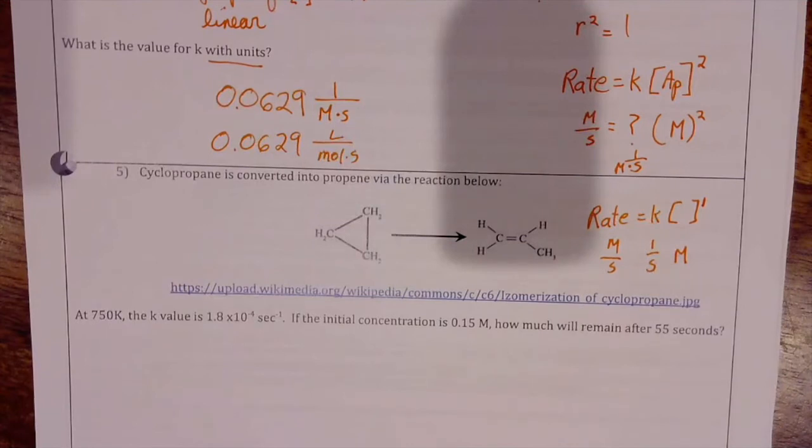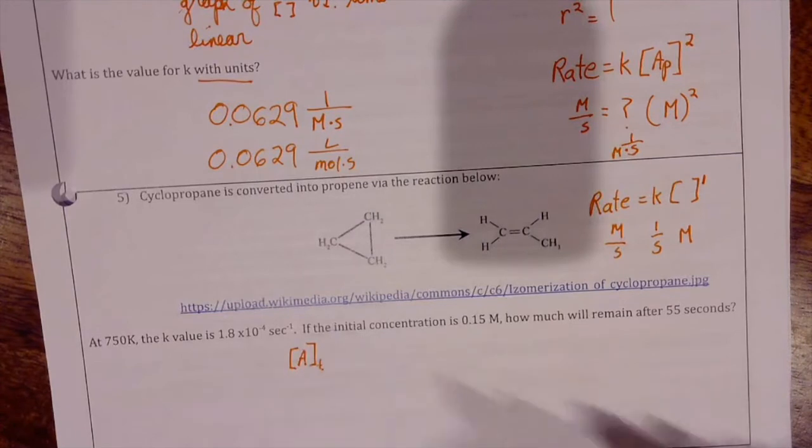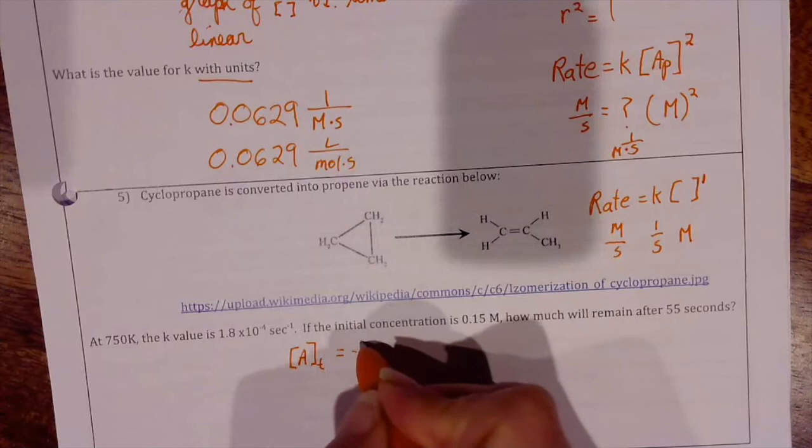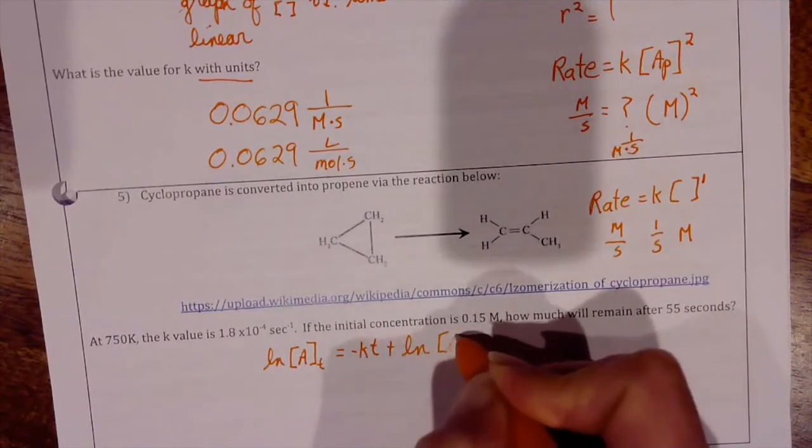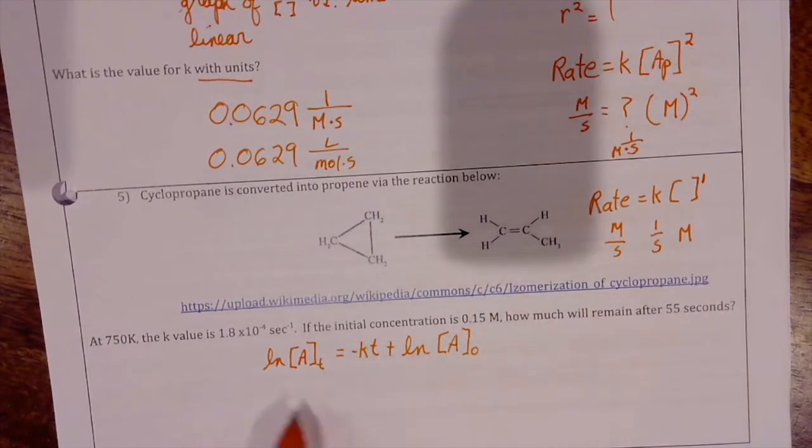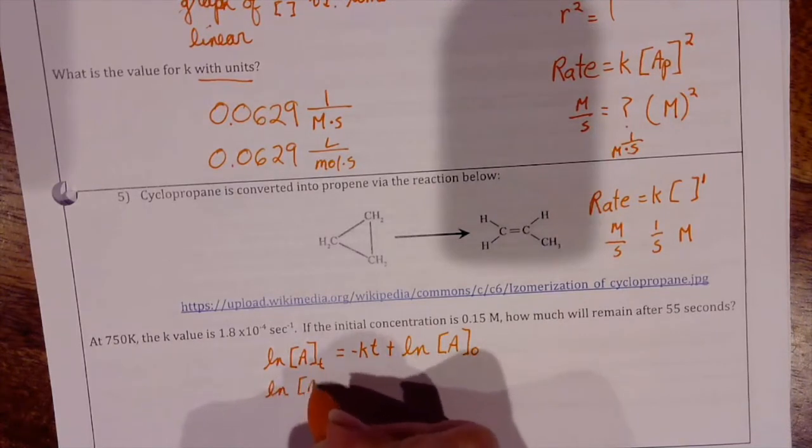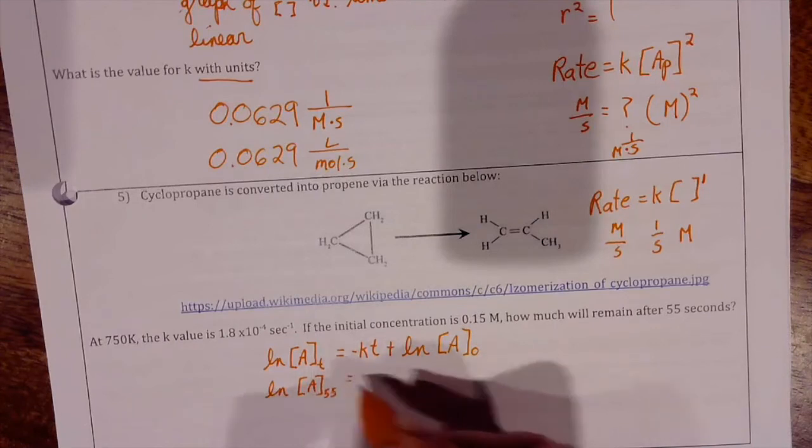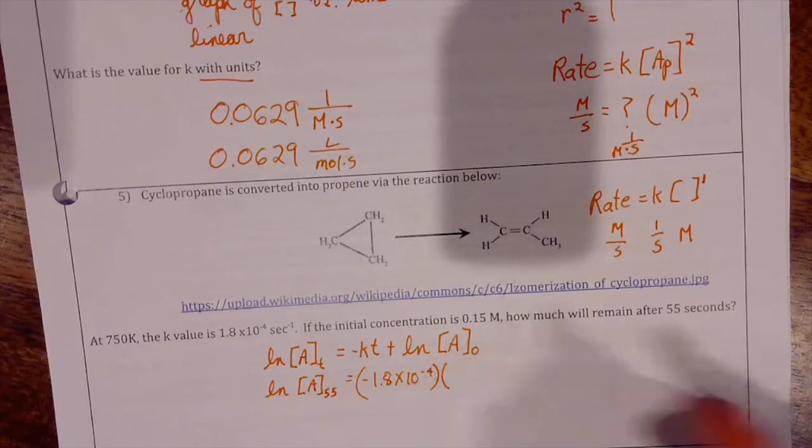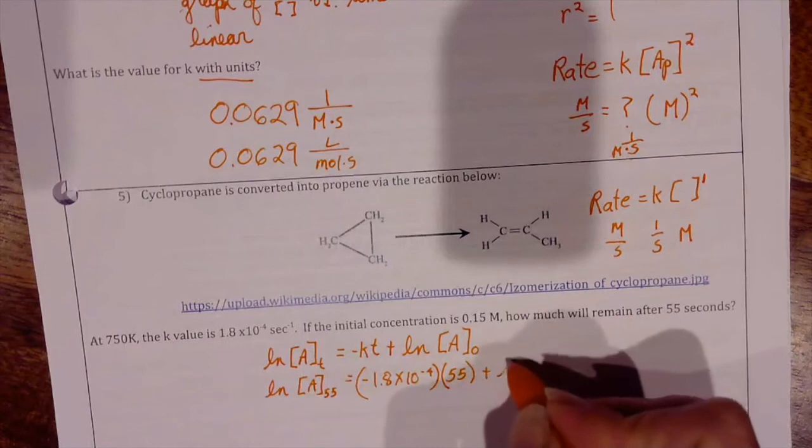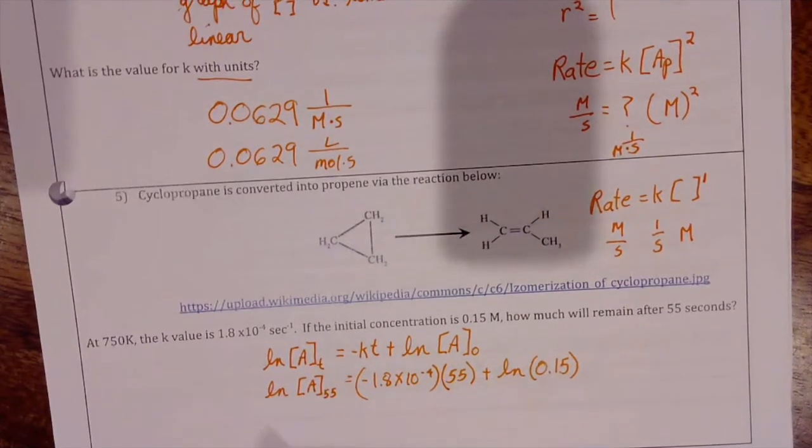Now knowing that this is a first-order reaction, I can write my integrated rate law which says that the natural log of the concentration at 55 seconds equals negative k times the time plus the natural log of the initial concentration. And so I can plug in the values for k and for time and for concentration, and we have that the natural log of the concentration at 55 seconds equals negative 1.8 times 10 to the negative 4th times 55 seconds plus the natural log of 0.15.